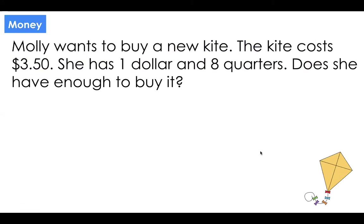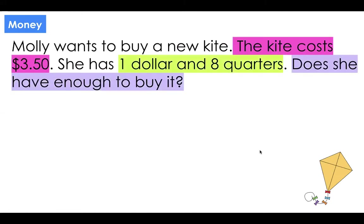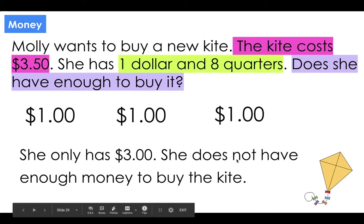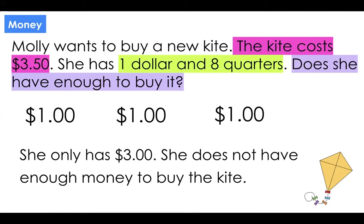Money. Molly wants to buy a new kite. The kite costs $3.50. She has $1.08. Does she have enough money to buy the kite? Pause the video and see if you can figure it out. The kite costs $3.50 — that's important information. She has $1.08. I need to figure out if $1.08 is enough to buy something that costs $3.50. Four quarters is $1.00 — so that's eight quarters for $2.00, and $1.00 is $1.00 — that means she only has $3.00. She does not have enough money to buy the kite. You can see I wrote a sentence to answer my story problem — sometimes a story problem needs more than just yes or no.